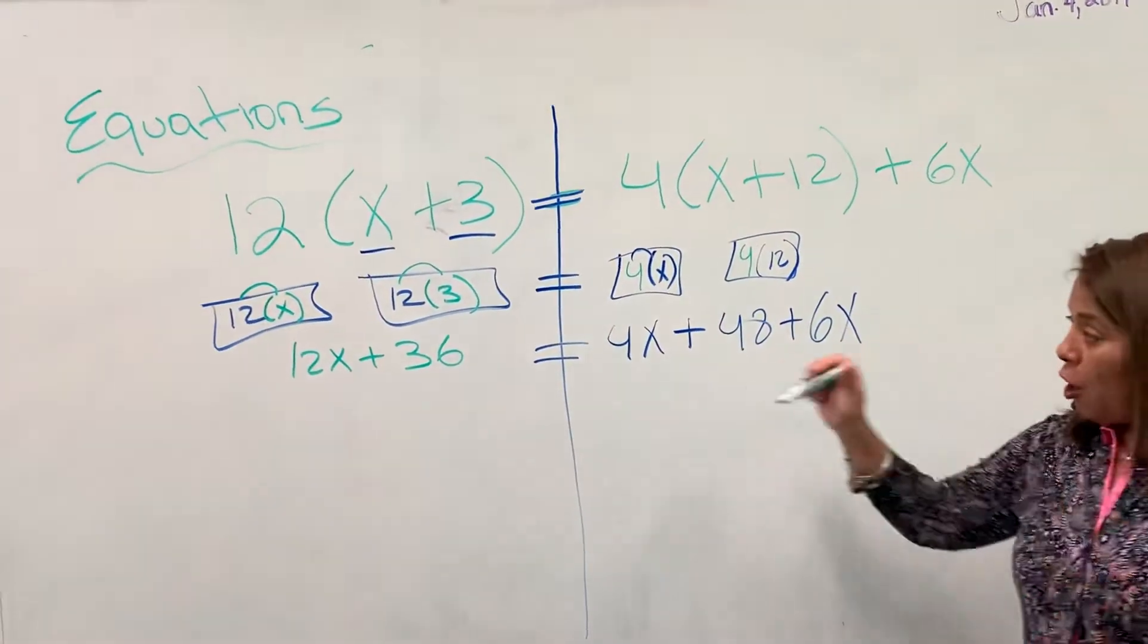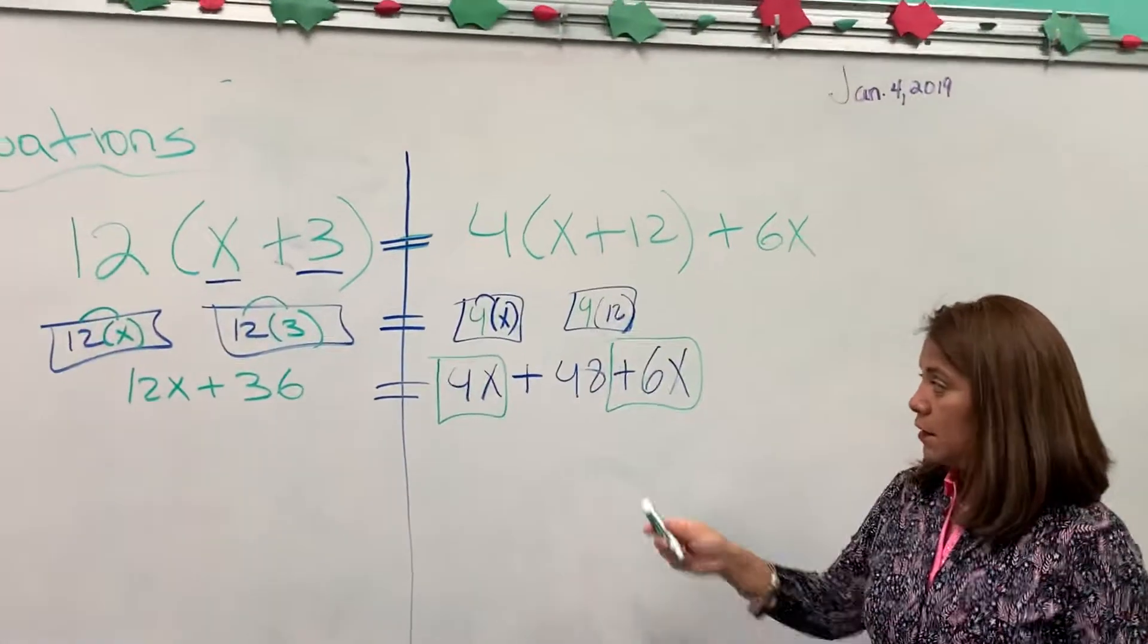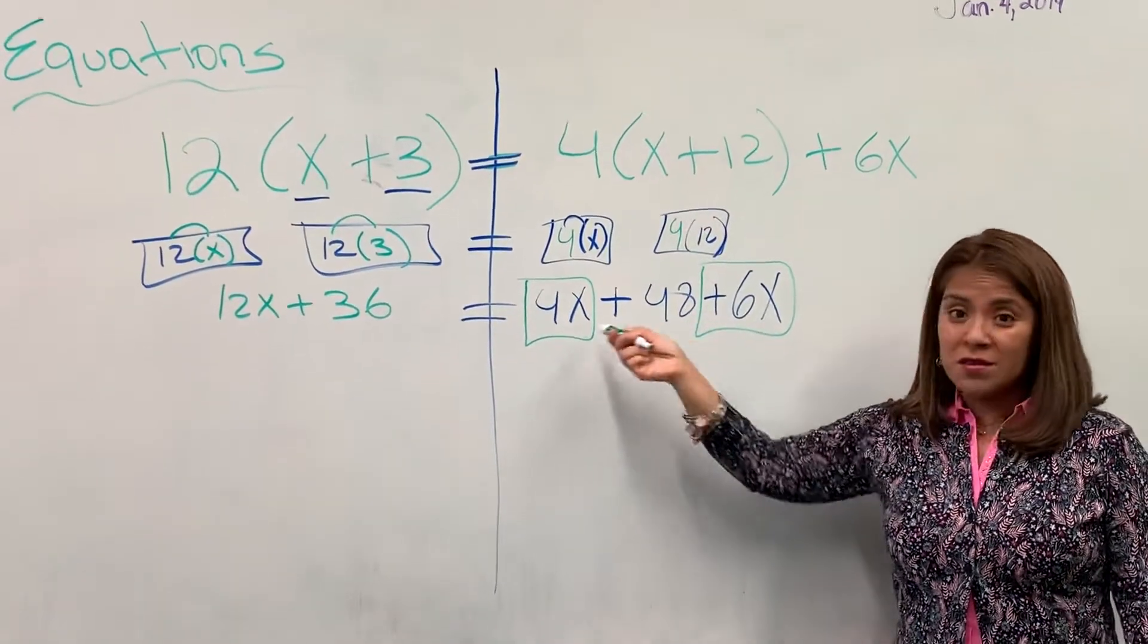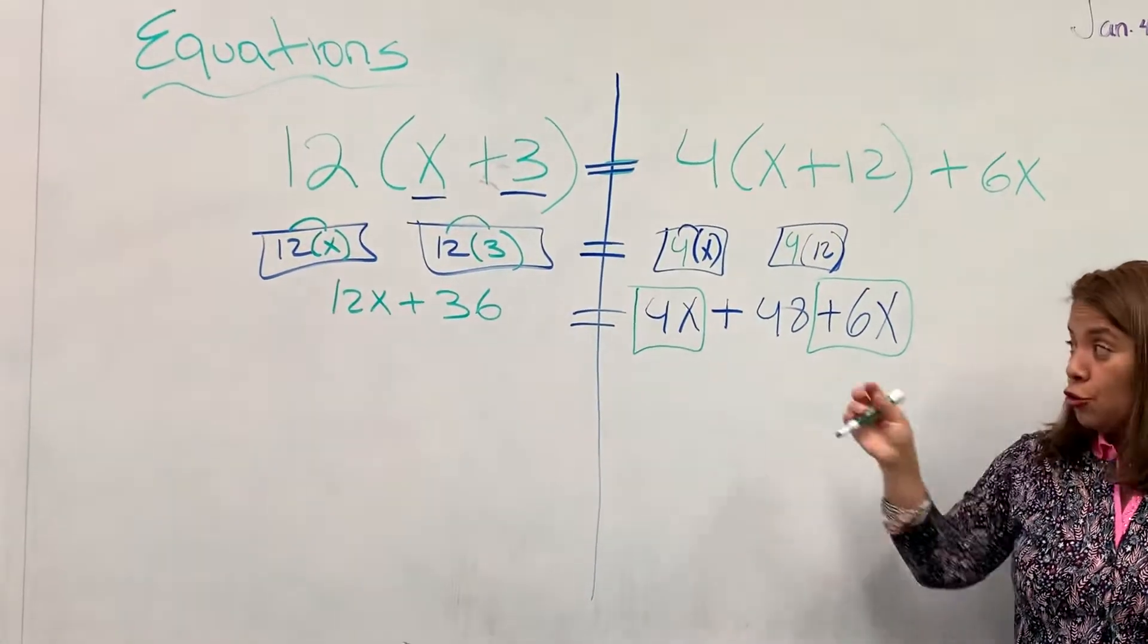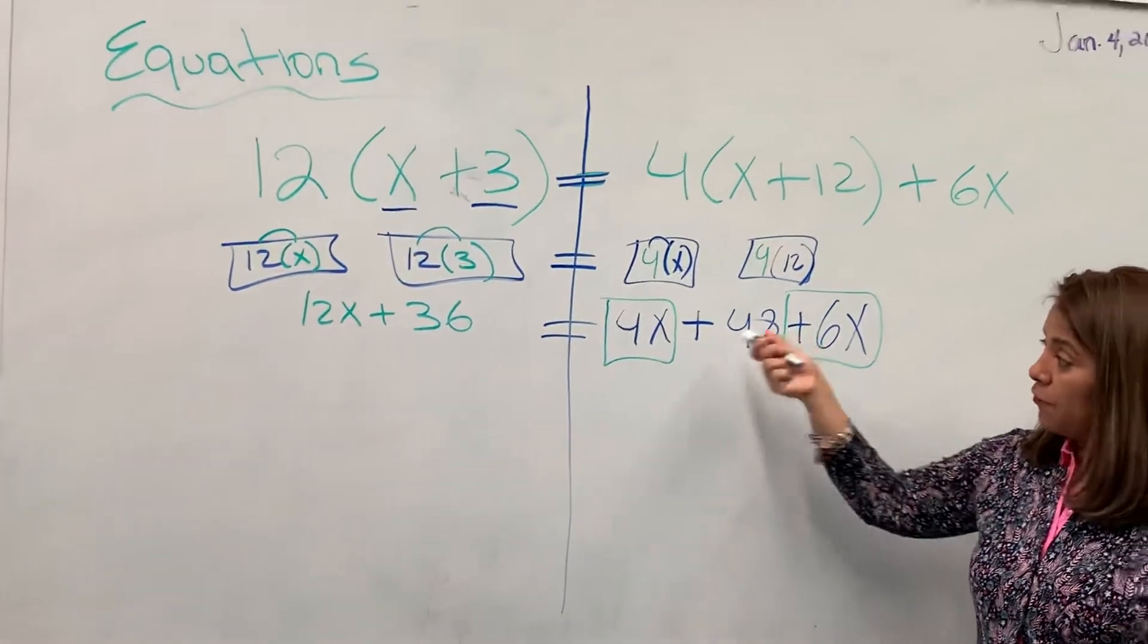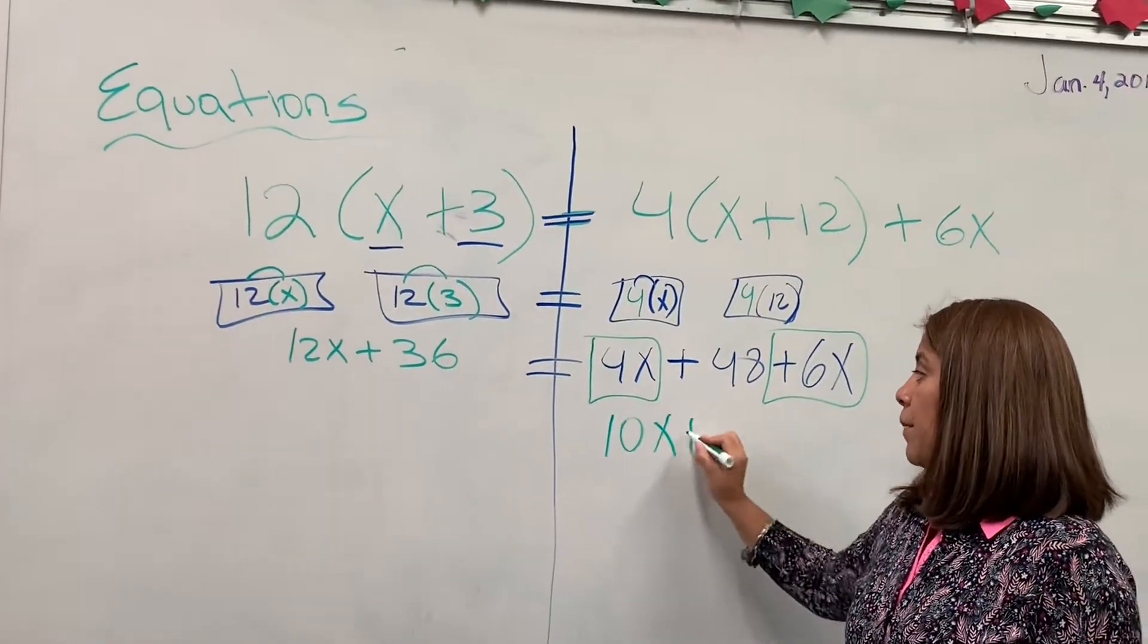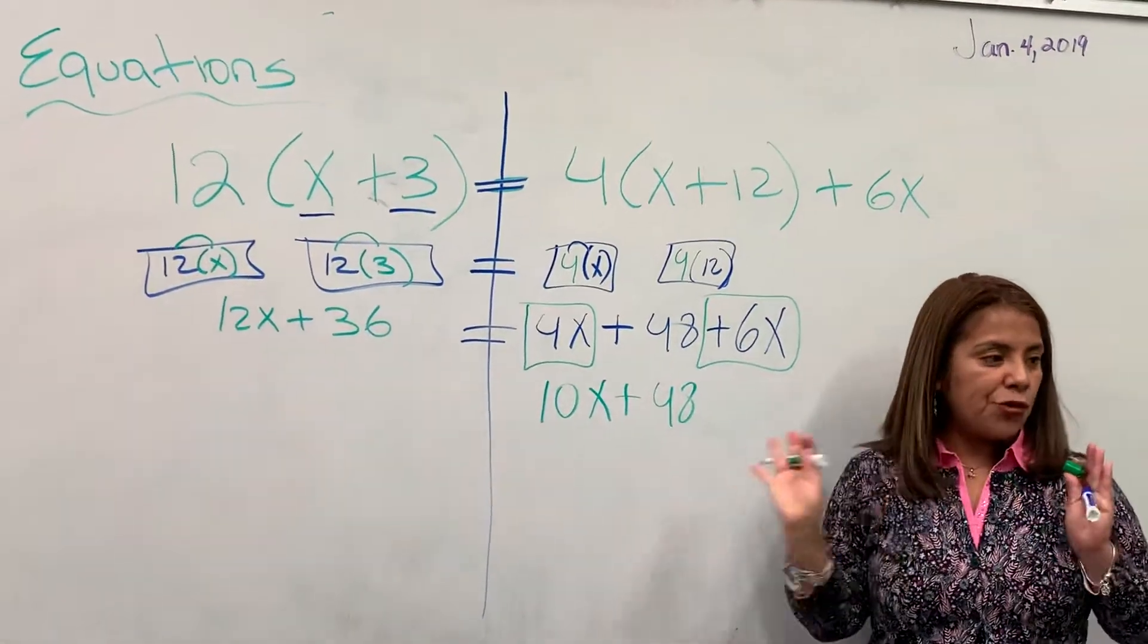Now notice here that I have two like terms. I have 4x and I have positive 6x. But there's no equal sign between them. You see that? There's no equal sign. So when you don't have an equal sign between those two like terms, you cannot do the inverse operation. All you're going to do is either add it up or subtract it. In this case, you have to add it because it has a plus. 4x plus 6x is going to give you equals to 10x. You're just going to add it up, bring down the positive, bring down the 48. These are not like terms. I'm going to stop there.